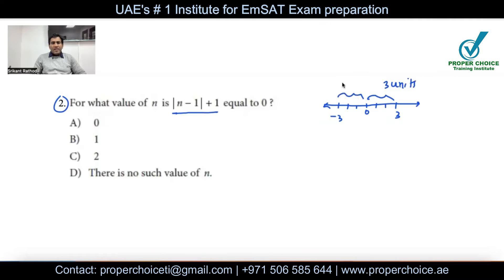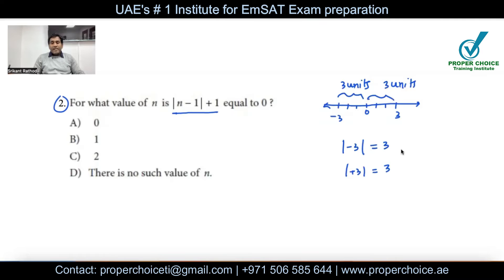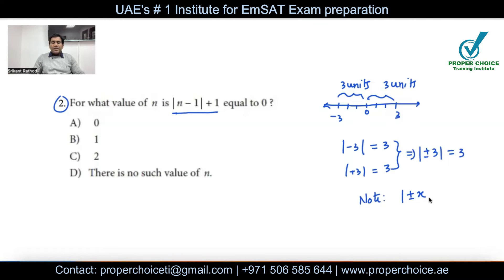And from 0 to negative 3 is also 3 units — we never say distance is negative. So |−3| = 3 and |3| = 3. Whatever number is written under those two lines, the result is the distance from 0. Irrespective of whether the number inside is positive or negative, the result is always positive. The minimum value an absolute expression can have is 0 — it never turns negative.